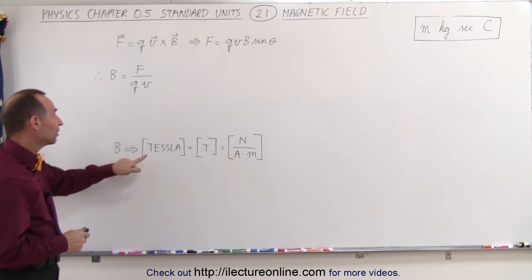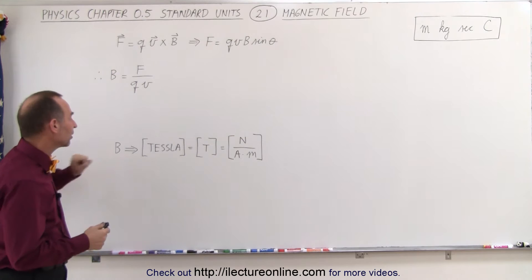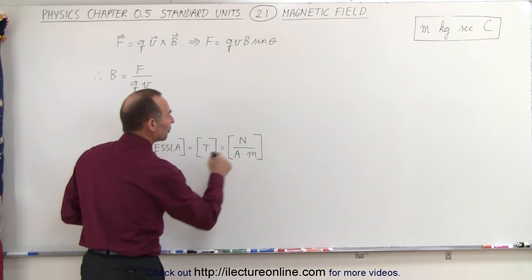The units for magnetic field is called Tesla. We use the letter T to indicate the unit for magnetic field, and Tesla is defined as Newton per amp per meter.